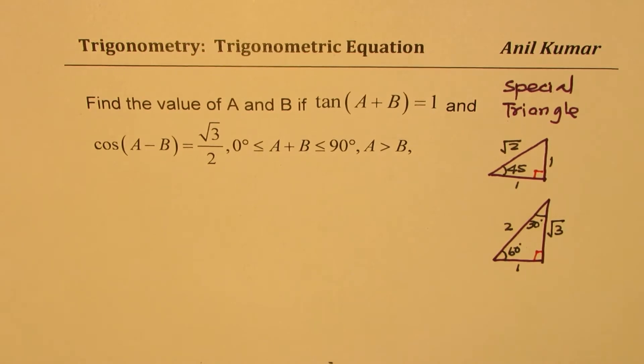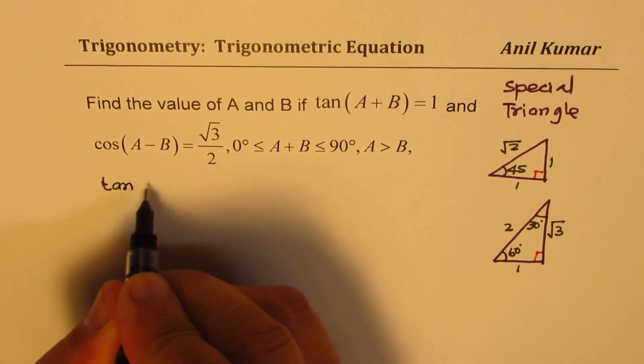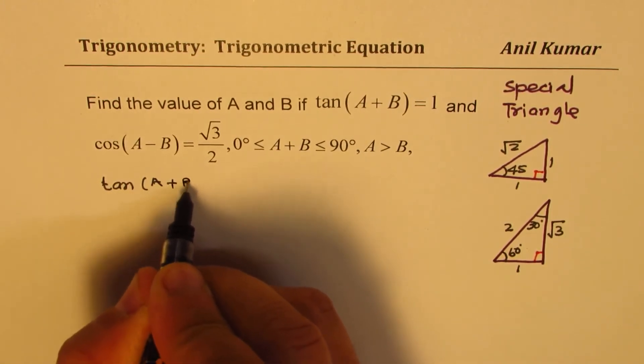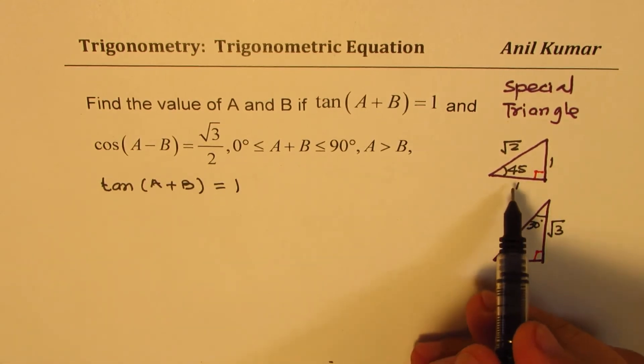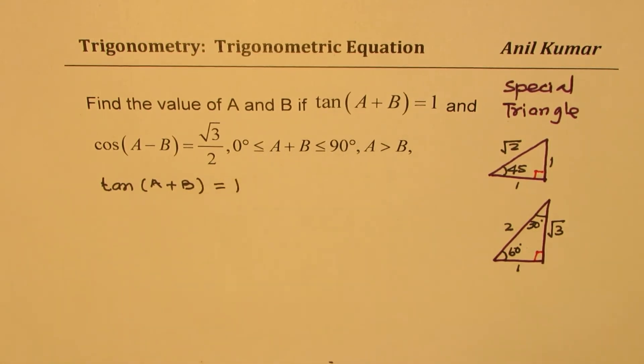Now once you have that, let's look into the question once again. We say tan(A+B) = 1. We are also given that A+B is within 90 degrees, so it is less than 90 degrees.